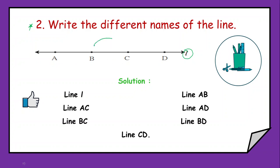Simply you can say line BC or line CB, BD or DB, AD or DA. So these all are the names of the same line.